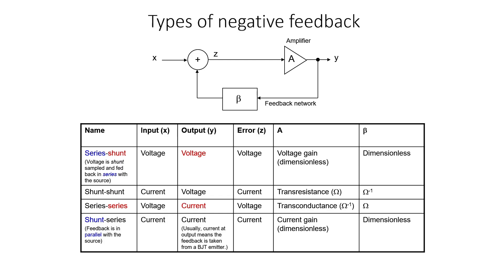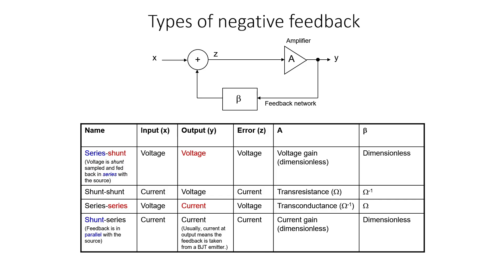There are four types of negative feedback: series-shunt, shunt-shunt, series-series, and shunt-series. It depends on whether the input to the amplifier is voltage or current. This table shows what units the gain, A, would have in that particular feedback network and what units beta would have in the feedback network as well.